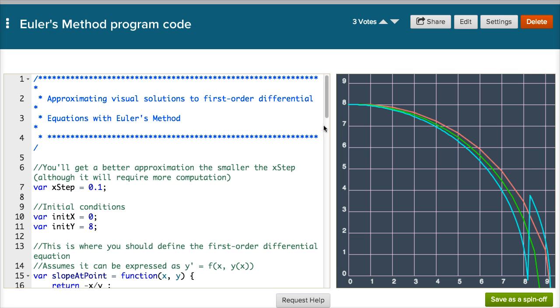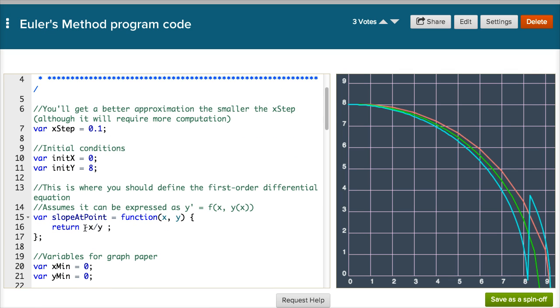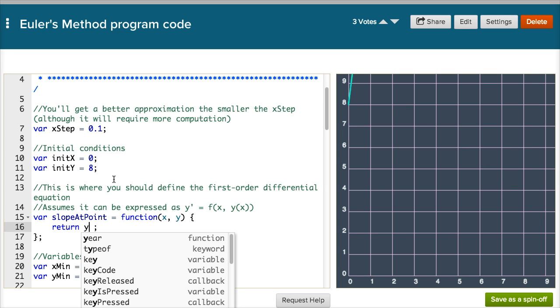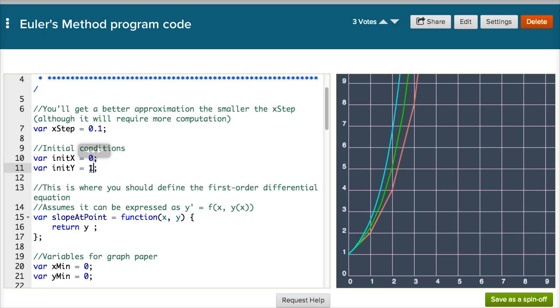You can do it with what we saw in the very first video, where we're approximating y is equal to e to the x. Well in that case, the slope at a point is equal to the y coordinate. Y prime is equal to y, and our initial condition is 0,1. And you see the blue one is getting really close to y is equal e to the x. But you could play with all sorts of neat things here.